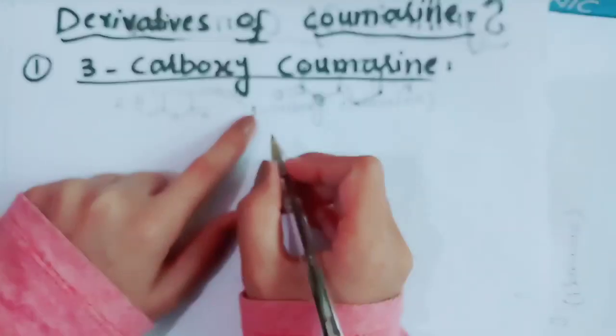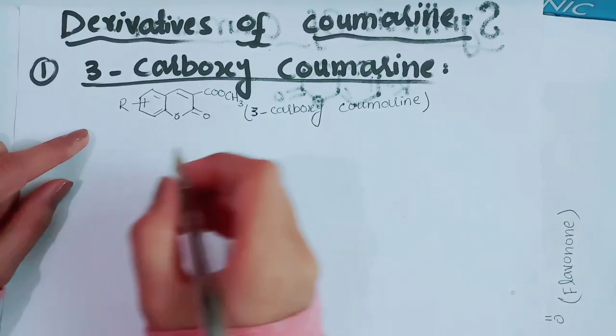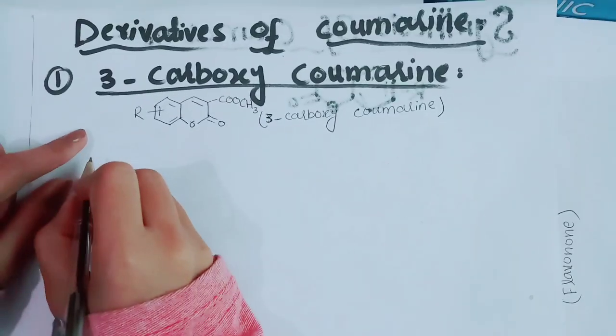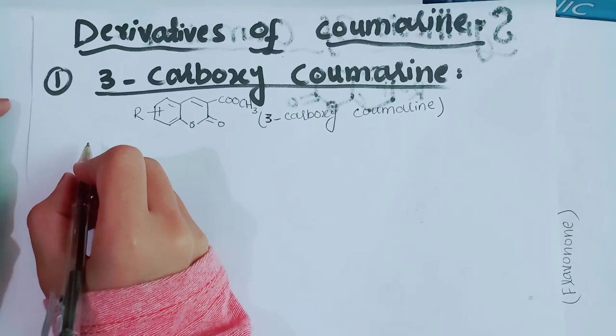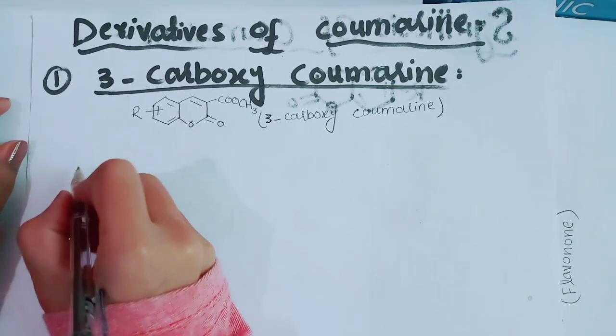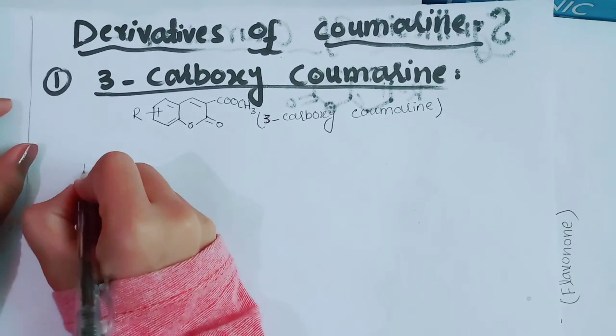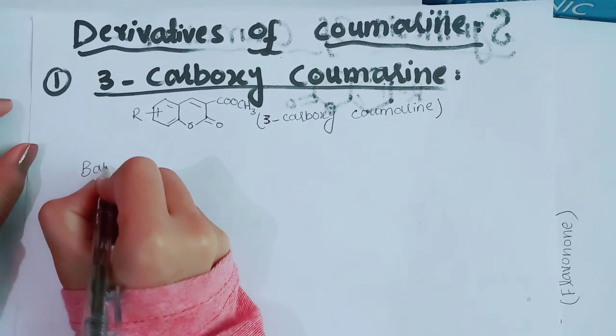Coumarin can be synthesized through a condensation reaction. Let's see in the detailed mechanism of it.